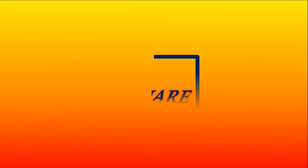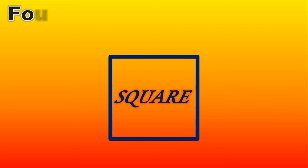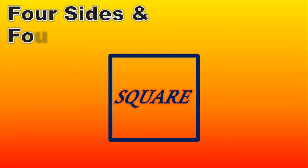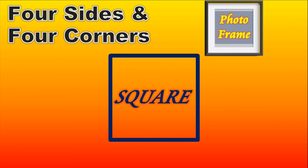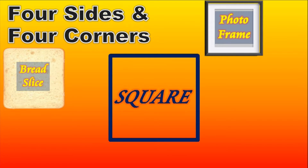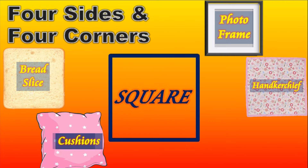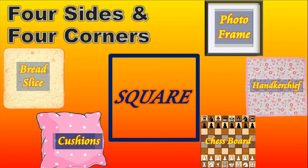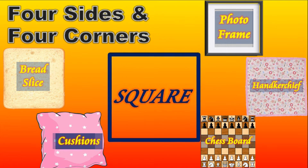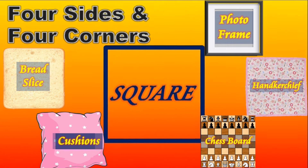Square. A square has four sides and four corners. Photo frame, bread slice, handkerchief, cushions, chess board — are in square shape.